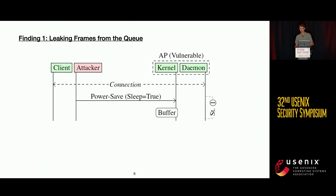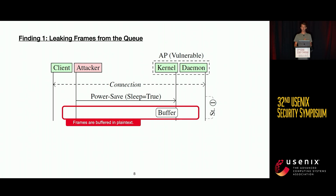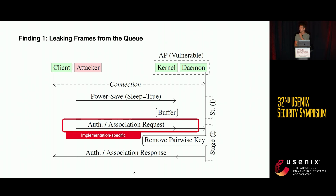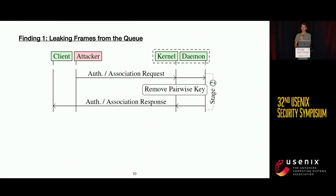In our first finding, as an attacker you can spoof frames from a client station and tell the access point 'we're going to sleep to save power — please buffer all data frames in the meantime.' It's important to note that in the Wi-Fi stack these frames are buffered in plaintext. The attacker can then send authentication or association frames, depending on the implementation, which removes the pairwise key from the access point.